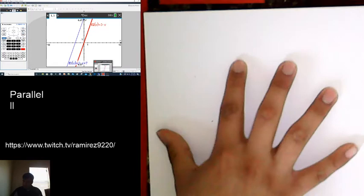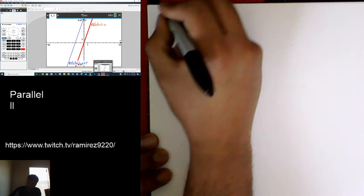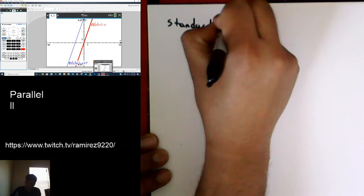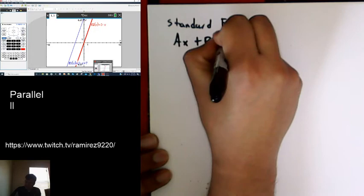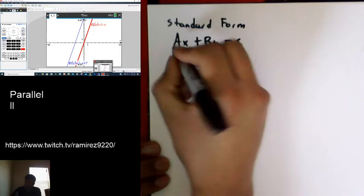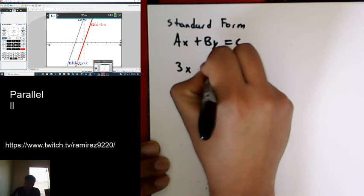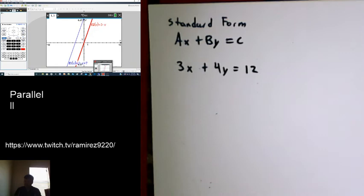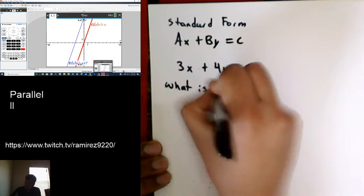Let's say you had the equation in standard form. Remember that when something's in standard form, it's Ax plus By equals C. That's usually what it looks like. So let's say we had the equation 3x plus 4y equals 12. And you were looking for what was the slope. What is the slope of a line parallel to this? Let's say that's what we're looking for.